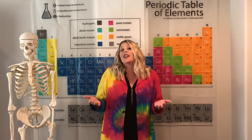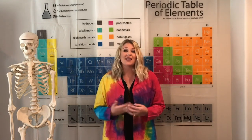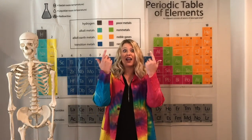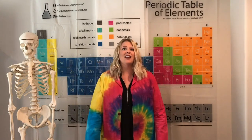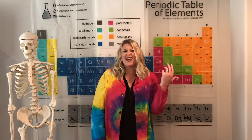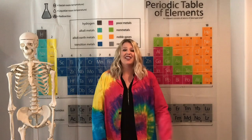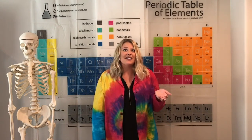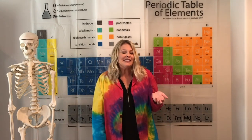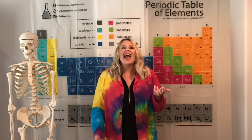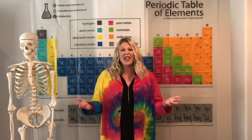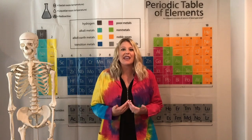Traits are just characteristics that living organisms have that make them unique. For example, I have blue eyes. I'm 5'7", I have blonde hair — well, technically it's brown. I have a size 8 shoe. Those are traits. They're characteristics about me.